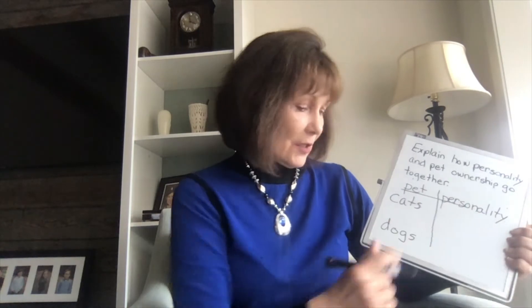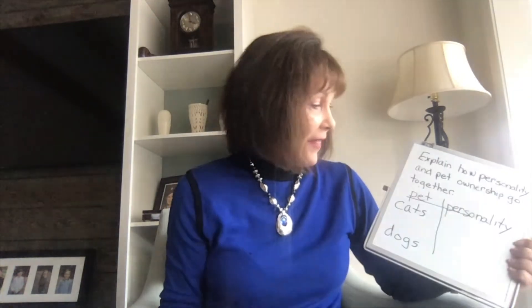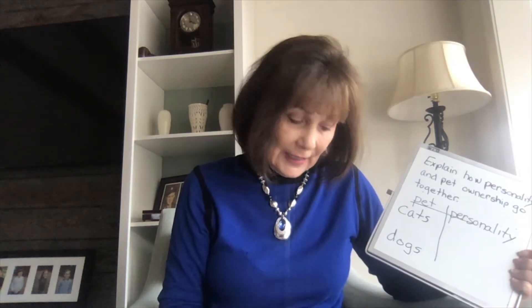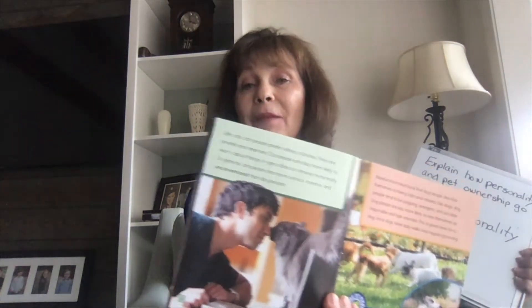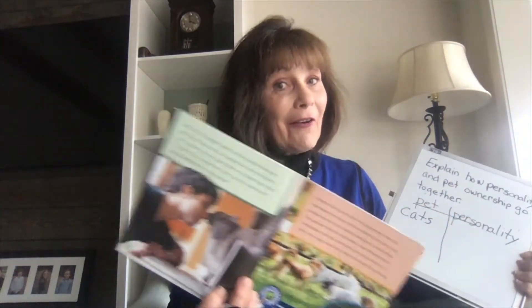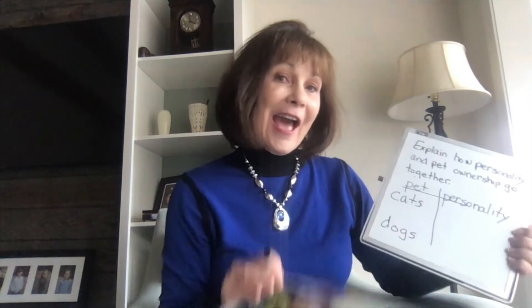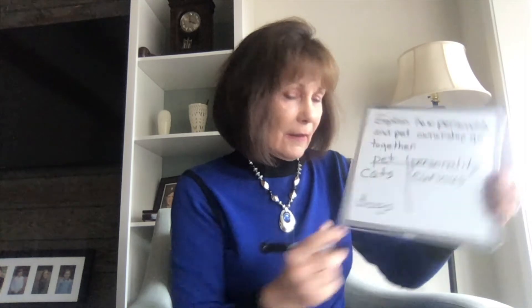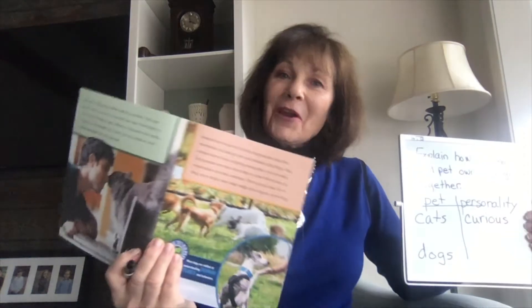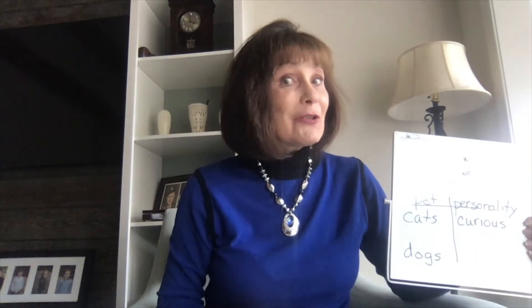Now, you're going to use what you read and list some personalities connected to cats and some connected to dogs. You can use your book to get some ideas. For example, on page 4, you'll find words that talk about cats — for example, there was the word 'curious.' You might add another word for cats and then pick a word for dogs, maybe even two.